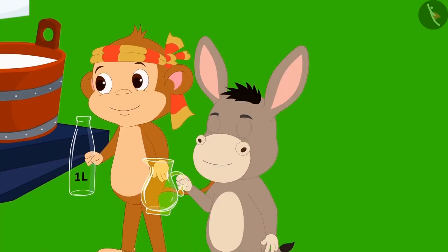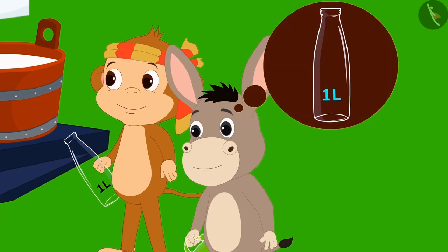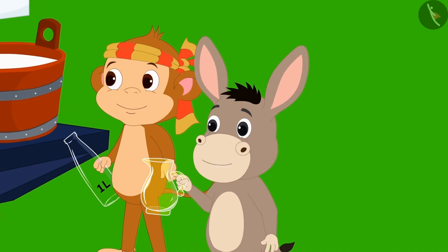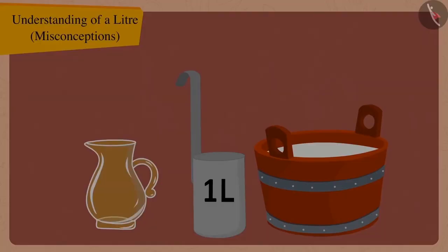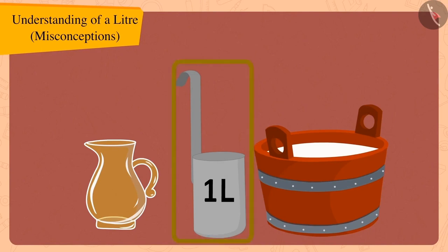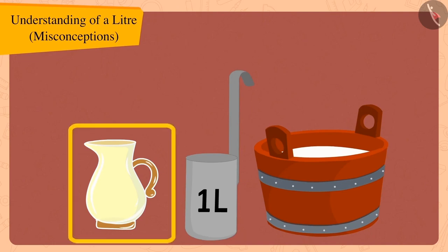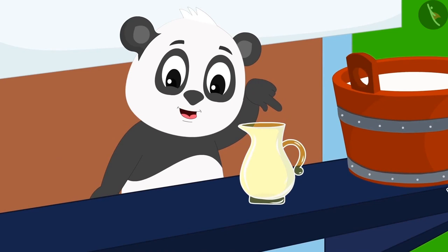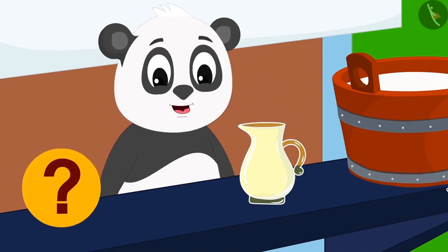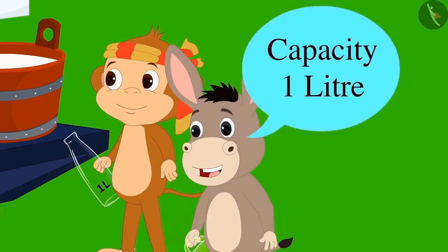Bholla immediately said to Golu: what is this? You gave me a jug instead of a one litre bottle — we can only measure using a one litre bottle, right? Children, do you think Bholla's statement is true? Golu laughed. He took the jug and poured milk from the one litre measure into it. The jug was completely filled with milk. Golu explained: if this jug was completely filled with one litre of milk, what does it mean? Bholla immediately replied: this means the capacity of this jug is one litre!